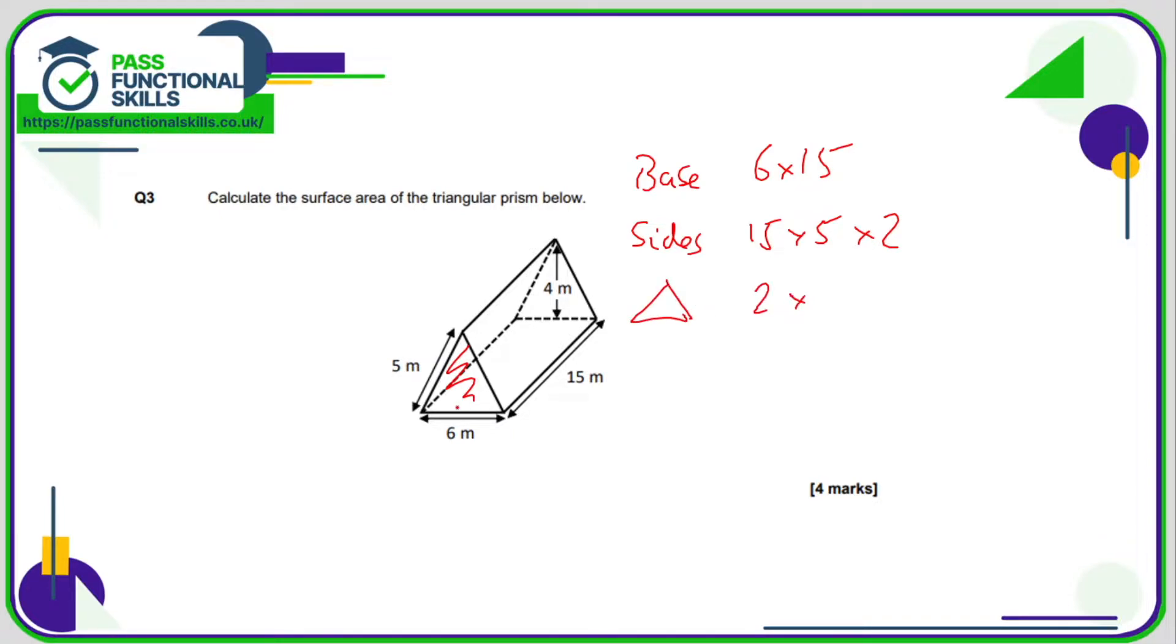So that's going to be two lots of, now the formula for a triangle is base times height divided by 2, so that's 6 times by 4 divided by 2. And maybe you've spotted that if you're multiplying 6 by 4 by 2 and then dividing by 2, that maybe you can just cancel these off and just do 6 times 4. 6 times 15, that comes to a total of, again you can use a calculator here which is good news.